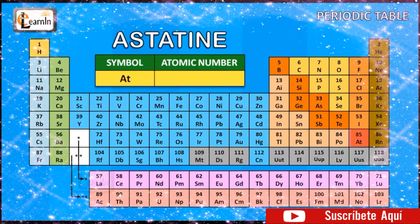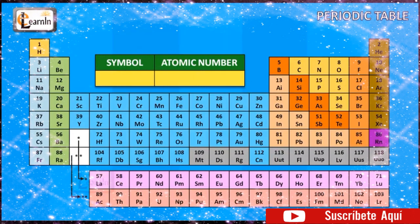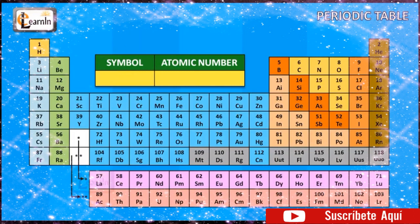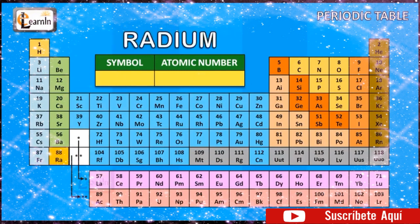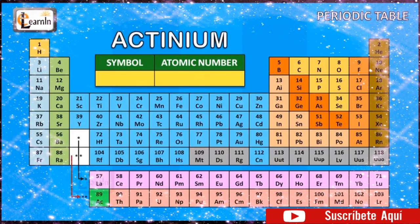The element astatine is represented as At and has an atomic number of 85. The element radon is represented as Rn and has an atomic number of 86. The element francium is represented as Fr and has an atomic number of 87. The element radium is represented as Ra and has an atomic number of 88. The element actinium is represented as Ac and has an atomic number of 89.